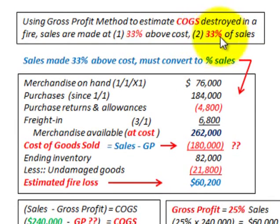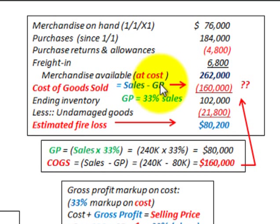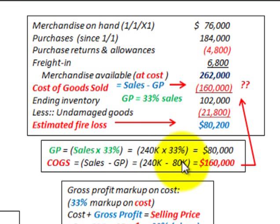Now let's look at the other case, which is simpler — the gross profit method where we take 33% of our sales. Same numbers: merchandise available at cost is $262,000. Cost of goods sold is sales minus gross profit, but here gross profit is 33% of sales — no conversion needed. Sales of $240,000 times 33% gives gross profit of $80,000. So cost of goods sold is $240,000 minus $80,000, which equals $160,000.